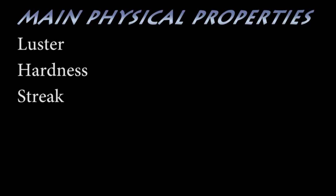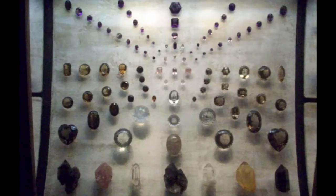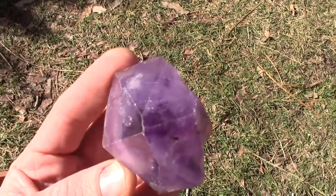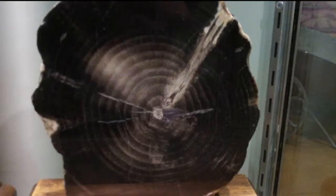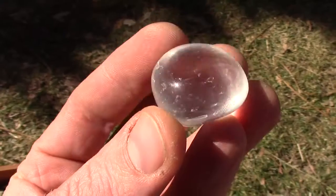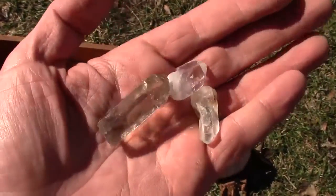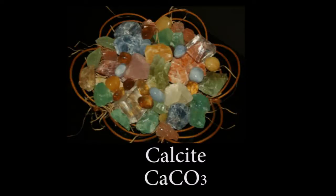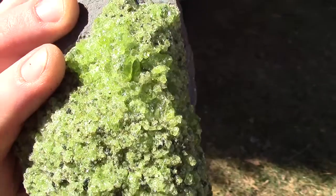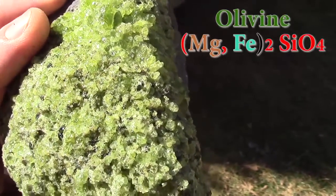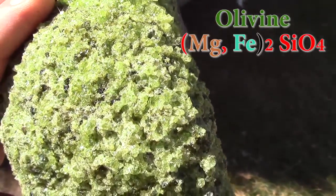The next property is the most obvious, color. However, it can also be the most useless, as what I've been showing you while talking about color is all just quartz. Slight impurities can change the color of some minerals drastically, so we must be careful.